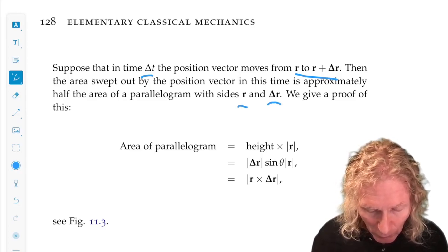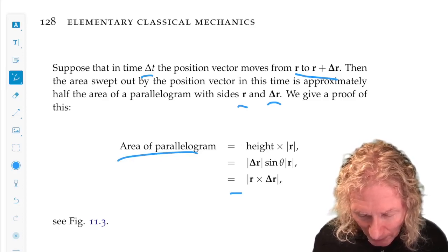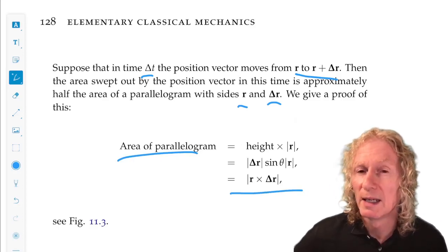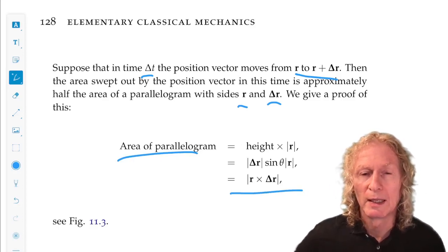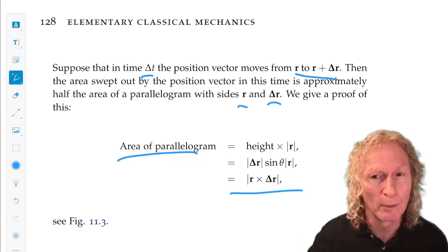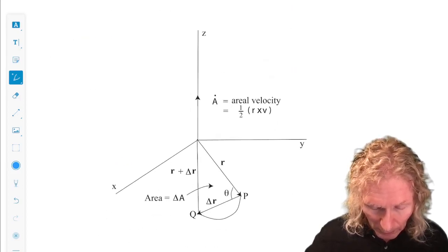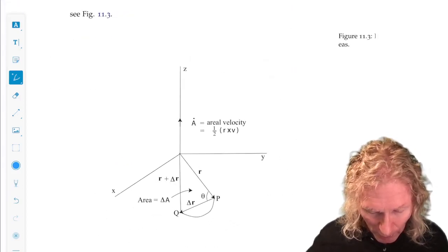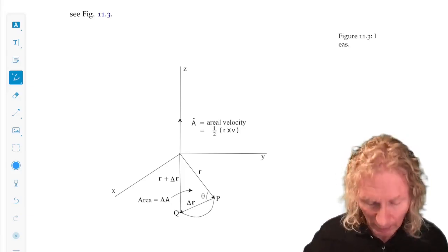The full area of the parallelogram is the magnitude of r × Δr, and this was a problem at the end of Chapter 1 for understanding the geometry of cross products. So this is the picture we have, and you can work out that geometry very easily again.